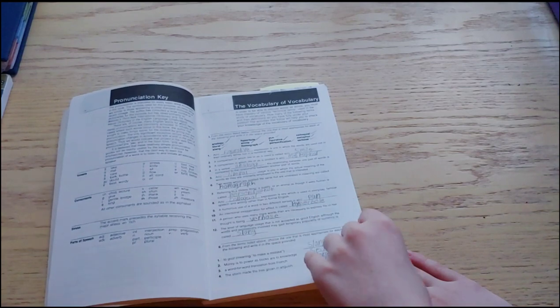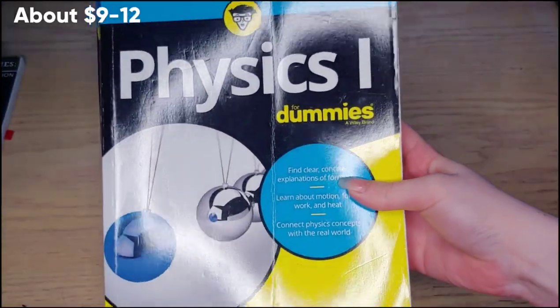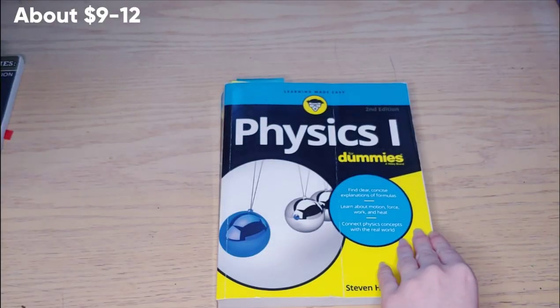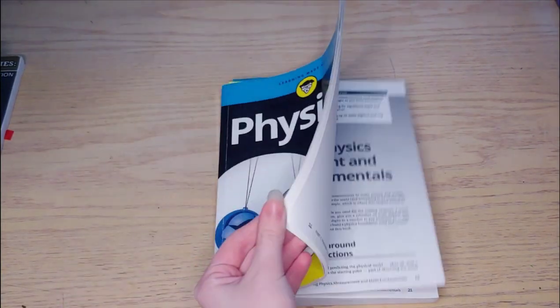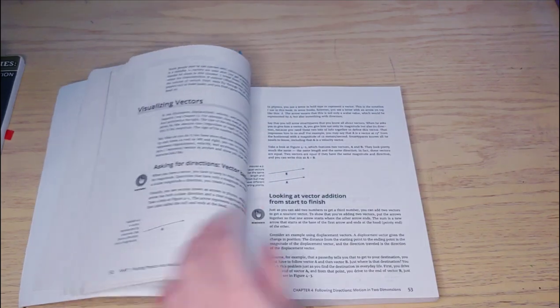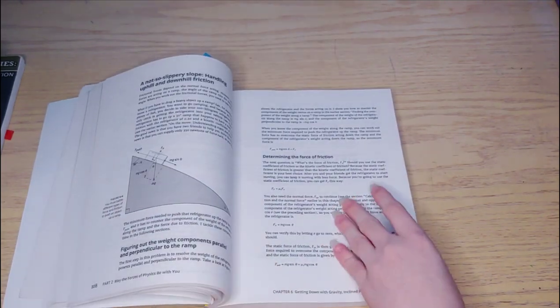The next book is actually from Amazon, and this is Physics One for Dummies. This is a great book. It's kind of like a review. It's in the format of an easy-to-read textbook, and this is great if you're building a curriculum on a budget.